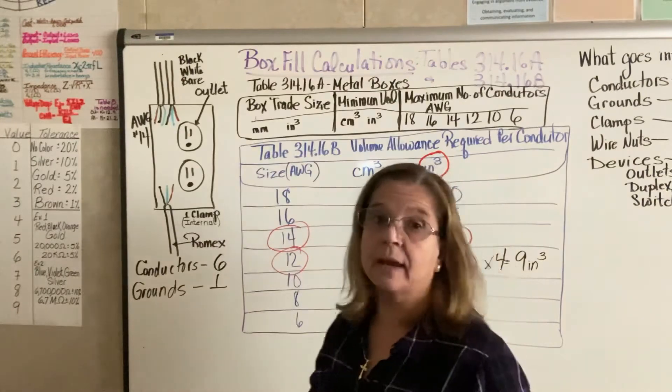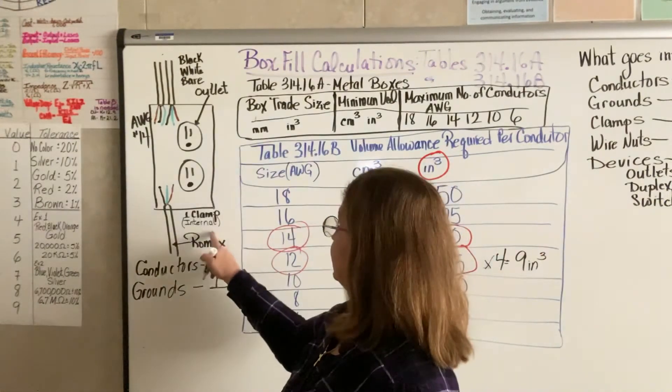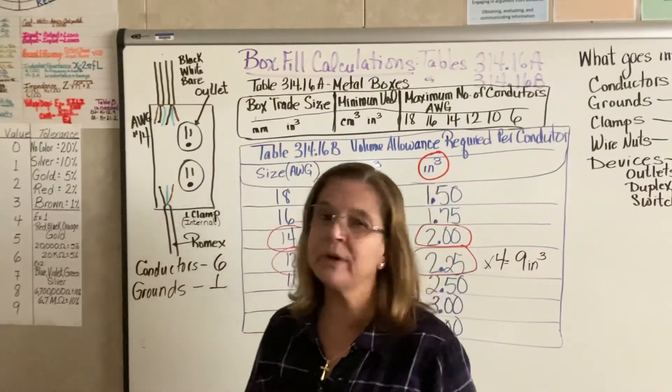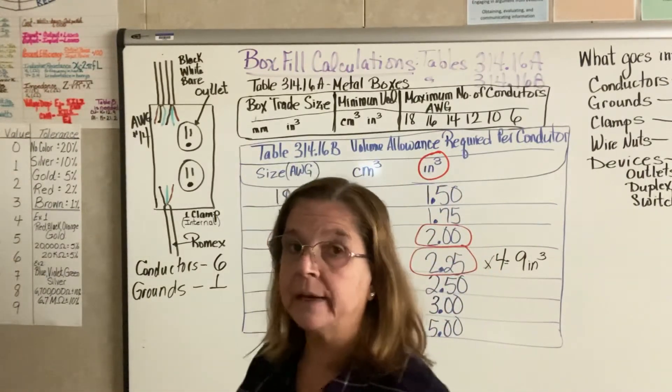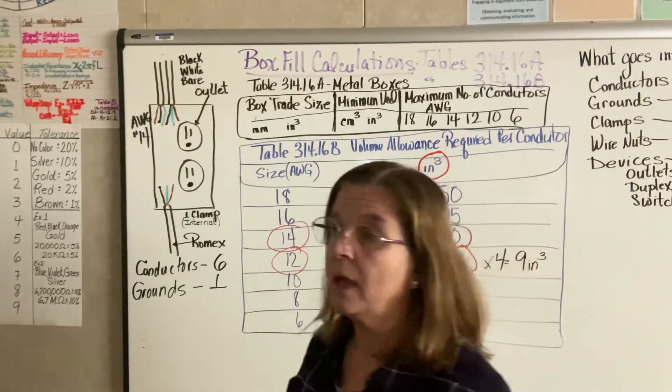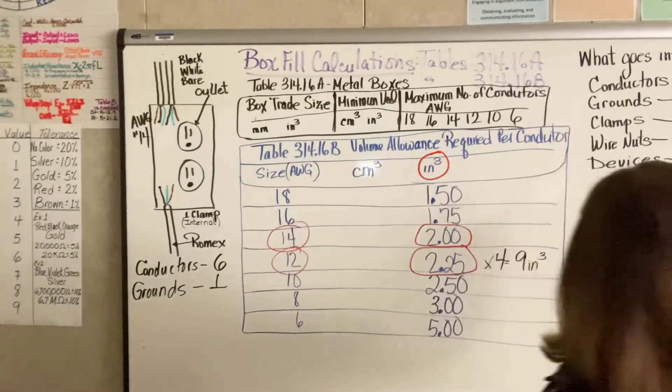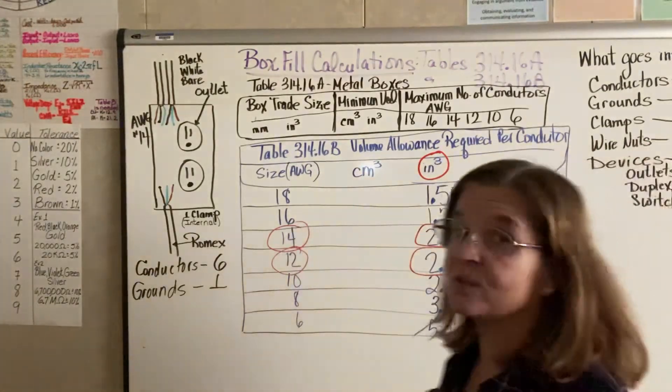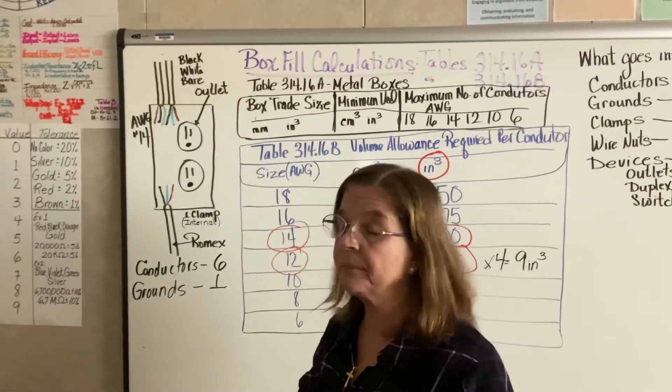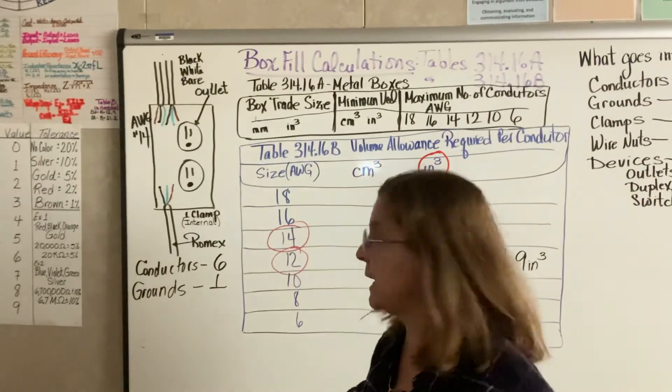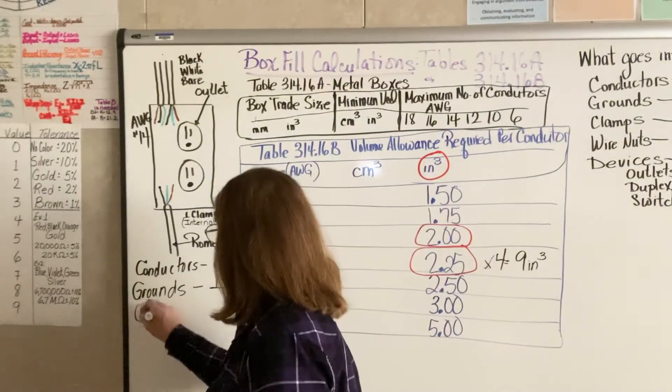What else do I have? Well, it says here there's an internal clamp. We don't worry about the outside. Anything outside does not affect the volume inside. So we have one clamp and I check my little list over here and clamps count as one. Whether I have one clamp, two clamps, three clamps, the clamps always just count collectively as one.